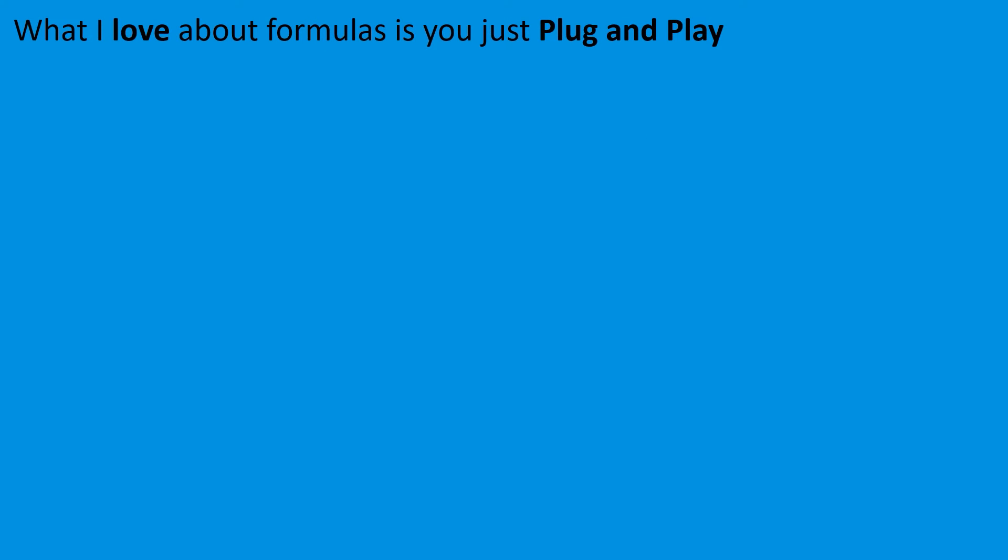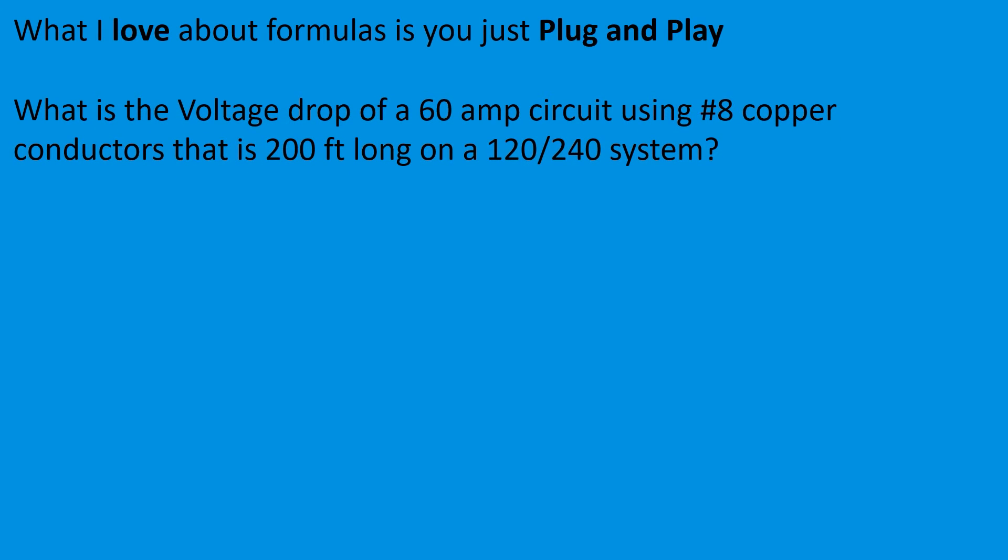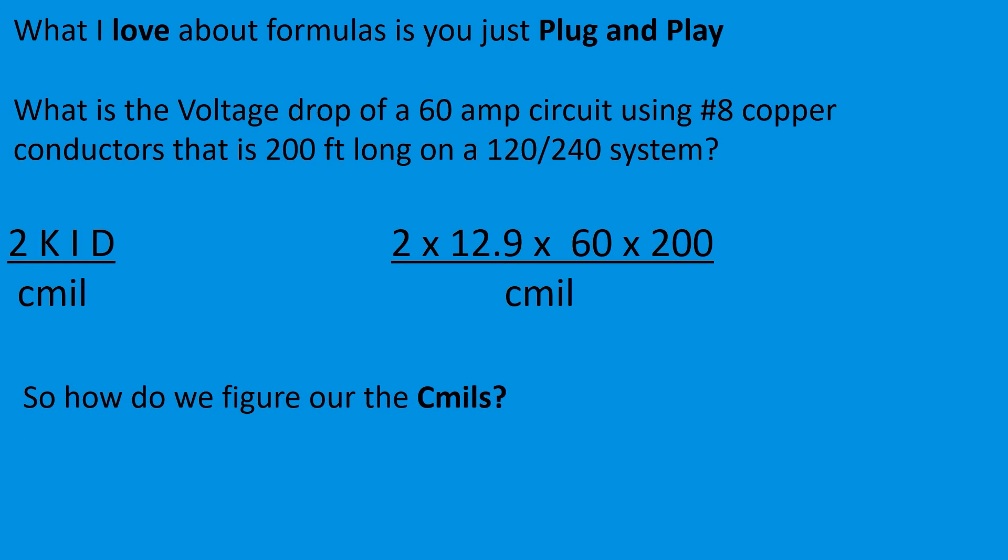What I love about formulas is you just plug and play. What is the voltage drop of a 60 amp circuit using number 8 copper conductors that is 200 feet long on a 120/240 volt system? Okay, so you just take it out. Put 2KID over cmil. So 2 is your constant for single phase. Then your multiplier, we're using copper in this case, so it's 12.9. Then you multiply it by the amperage and then multiply it by the distance. Now we need to figure out what the cmils are, and I'm going to teach you how to do that now.